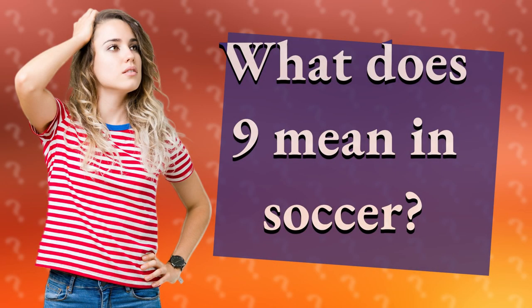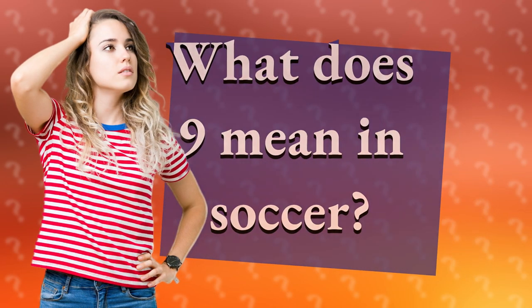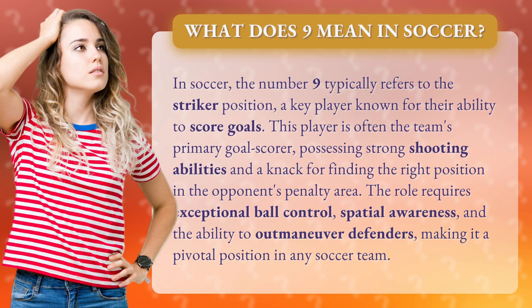What does 9 mean in soccer? In soccer, the number 9 typically refers to the striker position, a key player known for their ability to score goals. This player is often the team's primary goal scorer, possessing strong shooting abilities and a knack for finding the right position in the opponent's penalty area. The role requires exceptional ball control, spatial awareness, and the ability to outmaneuver defenders, making it a pivotal position in any soccer team.